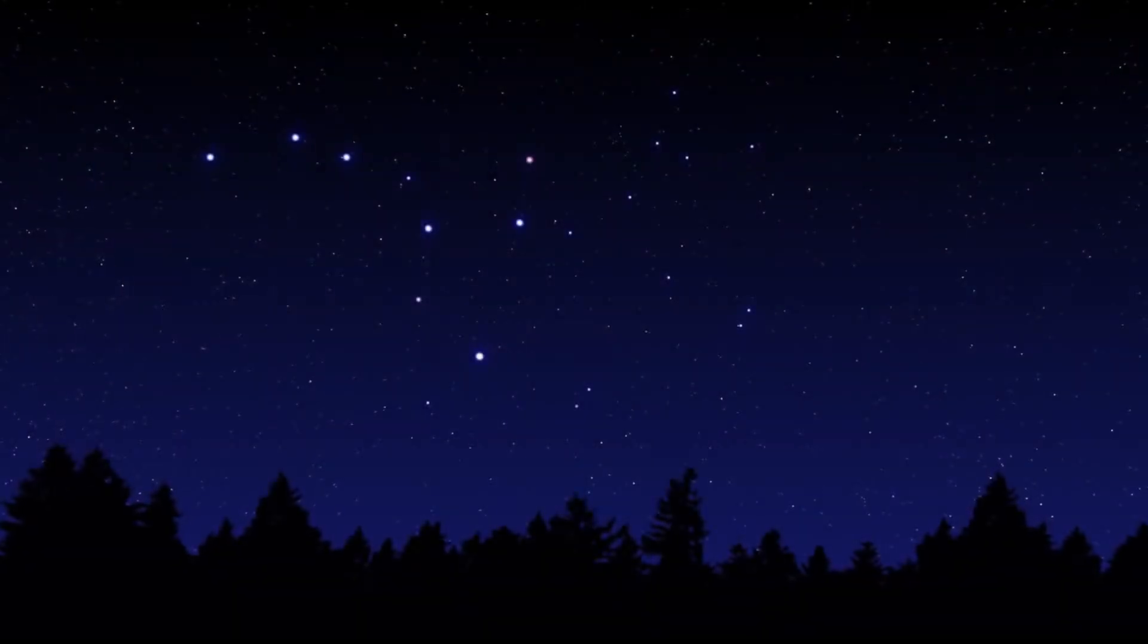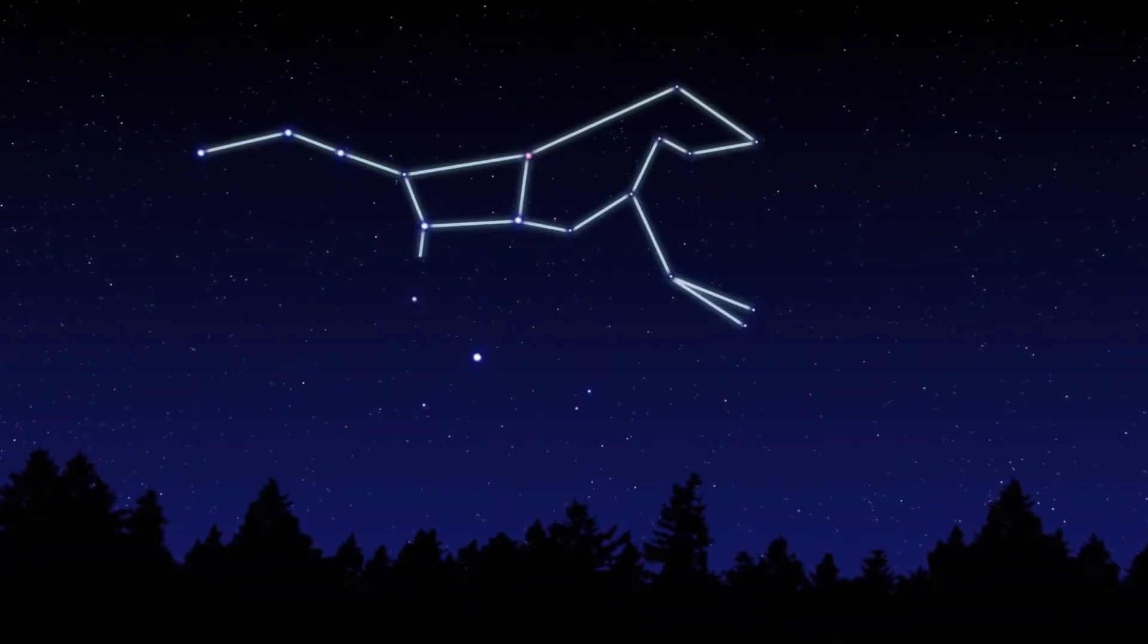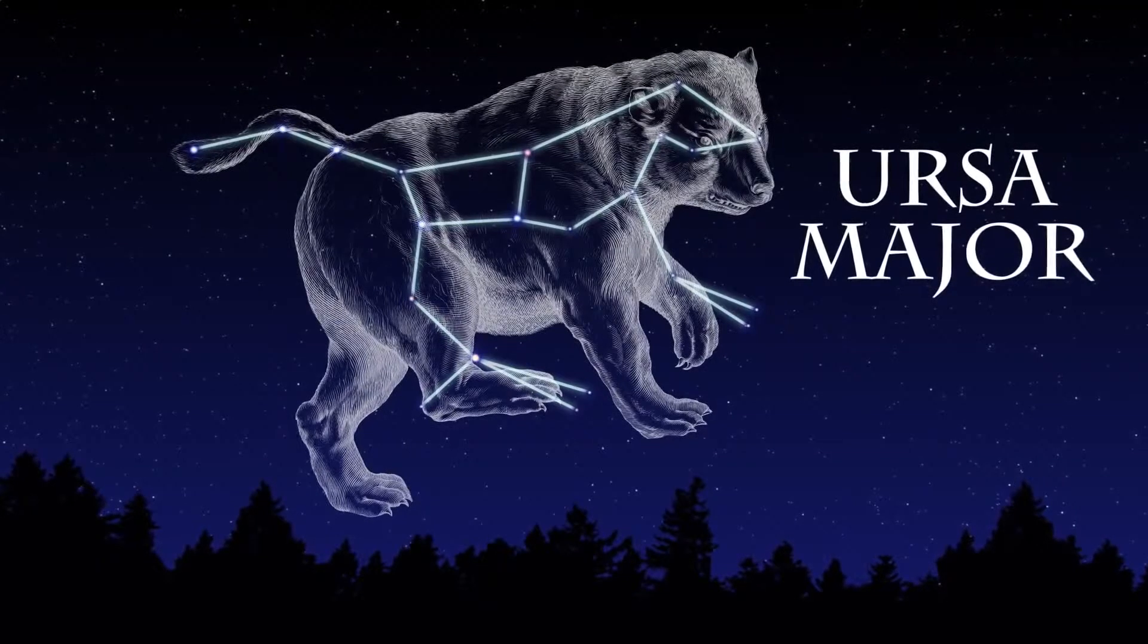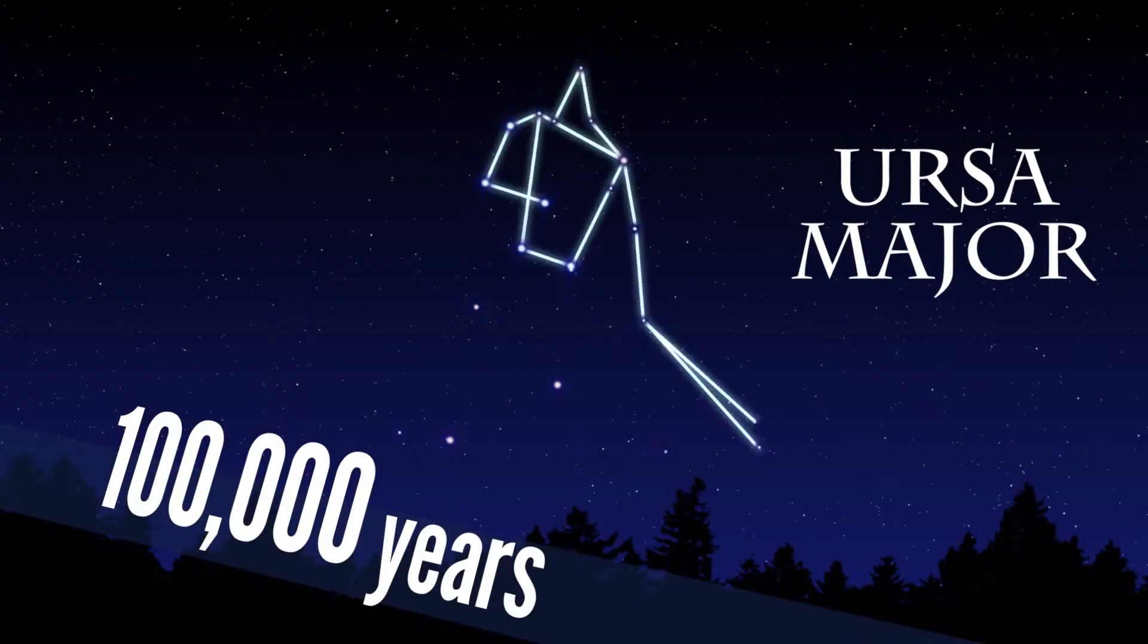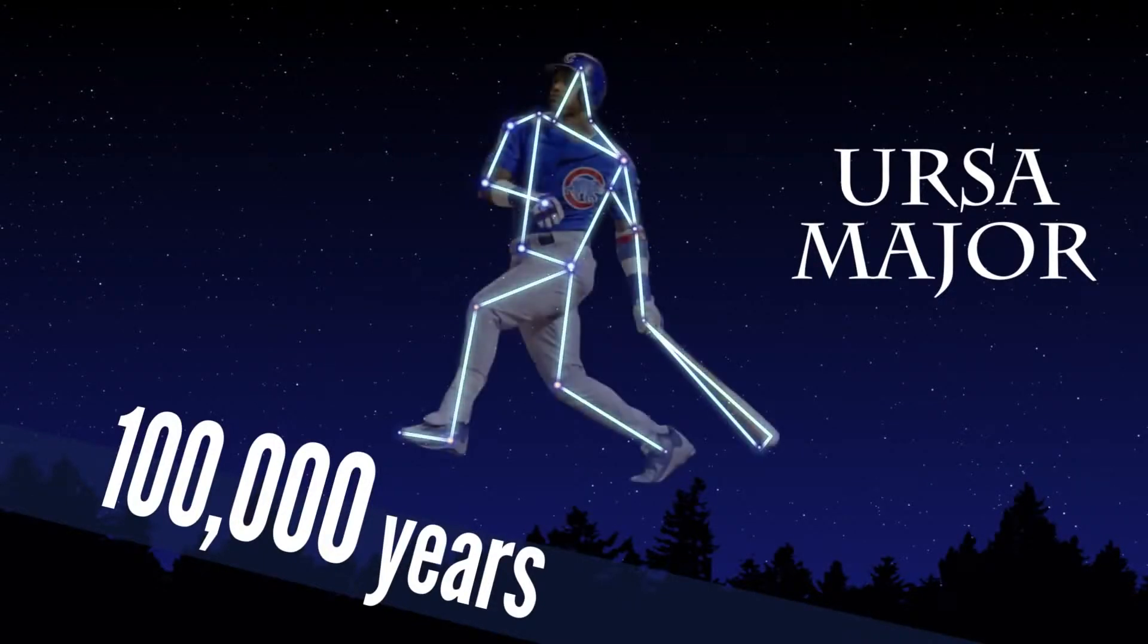On the scale of human lifespans, the stars may appear fixed in the sky, but they are moving. And in 100,000 years, not a single constellation we know today will be recognizable. But since our brains are fine-tuned to see patterns, I'm sure we'll find new ones.